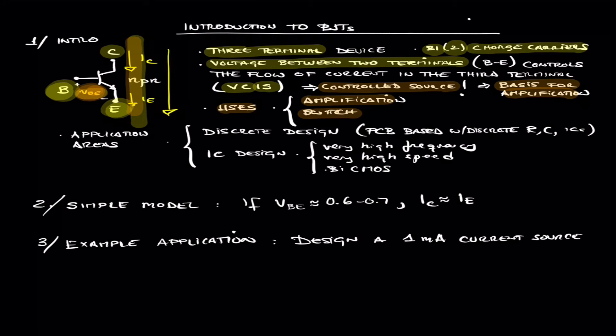Real application areas of BJTs: Nowadays, the BJT is still very popular in discrete design. So any time that you are doing on a printed circuit board an analog or mixed signal circuit using discrete resistors, capacitors, op-amps, other ICs, transistors, BJTs are heavily used.